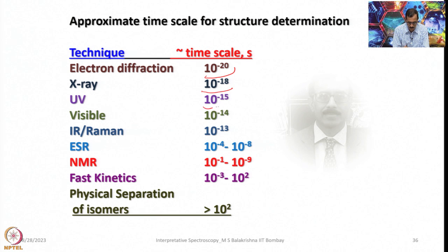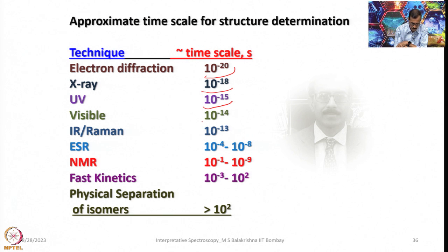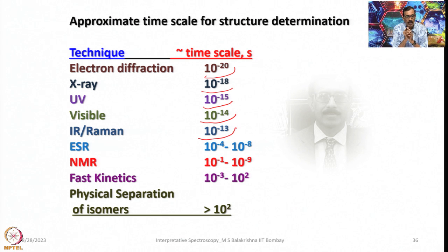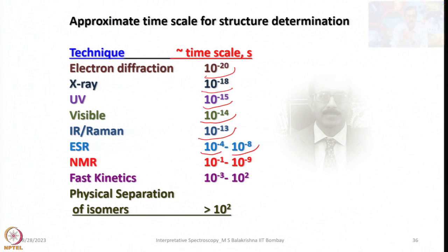That means whatever dynamic process happens up to 10⁻¹⁵ can be analyzed using UV-visible spectroscopy. In the case of visible it is about 10⁻¹⁴, and for IR and Raman it is about 10⁻¹³. For ESR it can range from 10⁻⁴ to 10⁻⁸, and for NMR it is 10⁻¹ to 10⁻⁹.